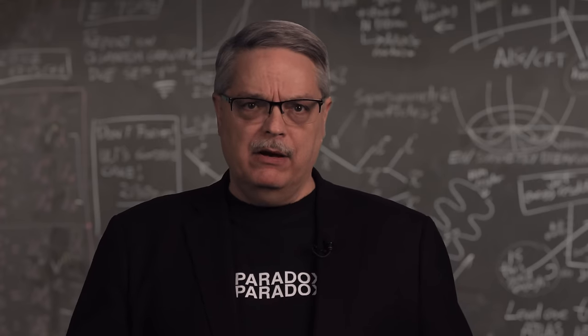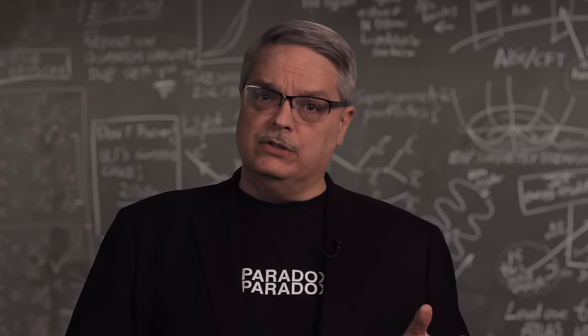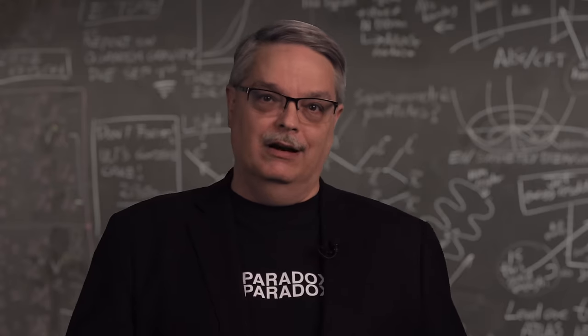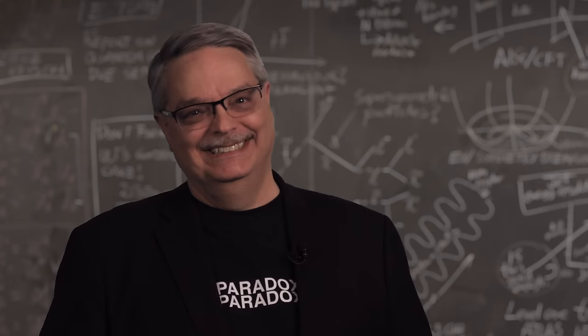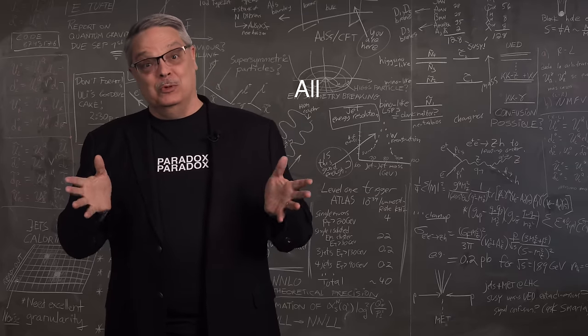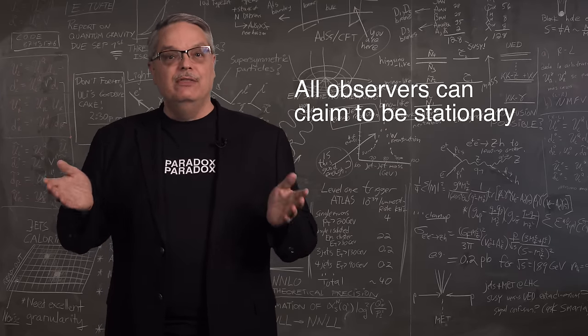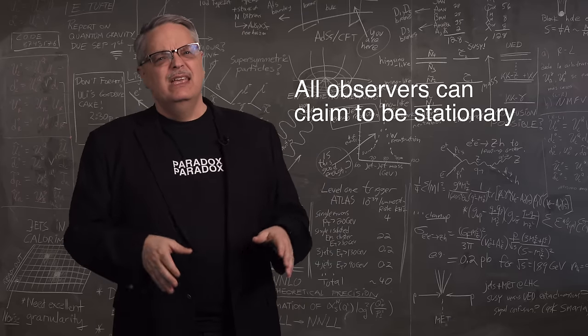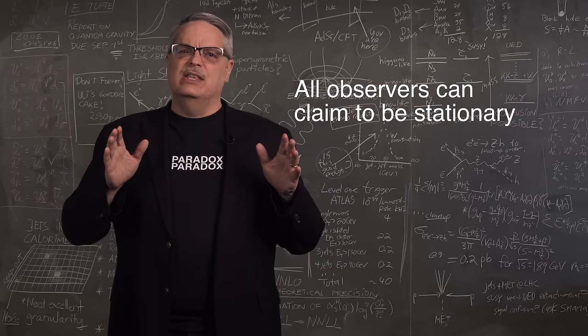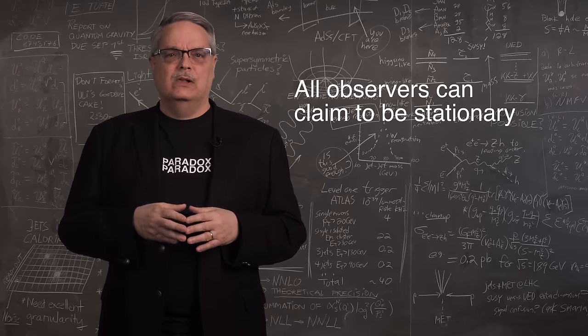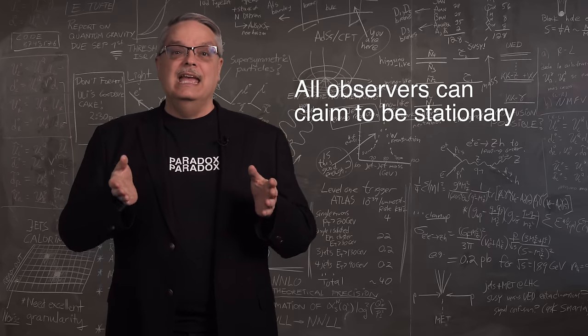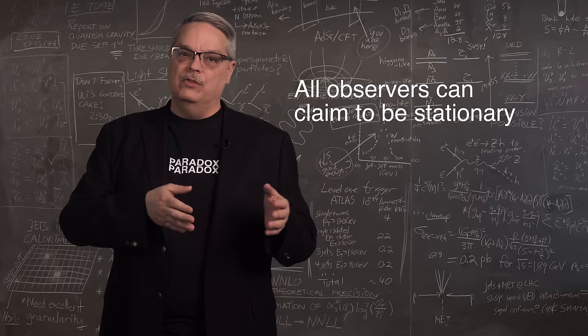This example is called a paradox because it involves Dr. Don and Dr. Ron and they are a pair of dogs. The real reason that it's called a paradox is because it seems to break one of the assumptions that goes into relativity. This assumption is that all people can equally well claim that they are unmoving and that people around them are the moving ones.